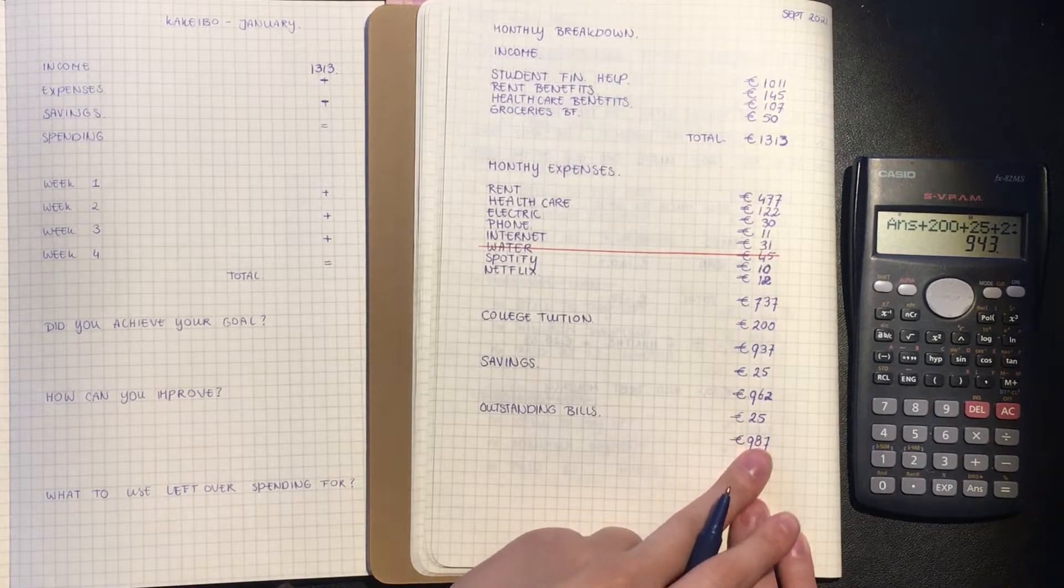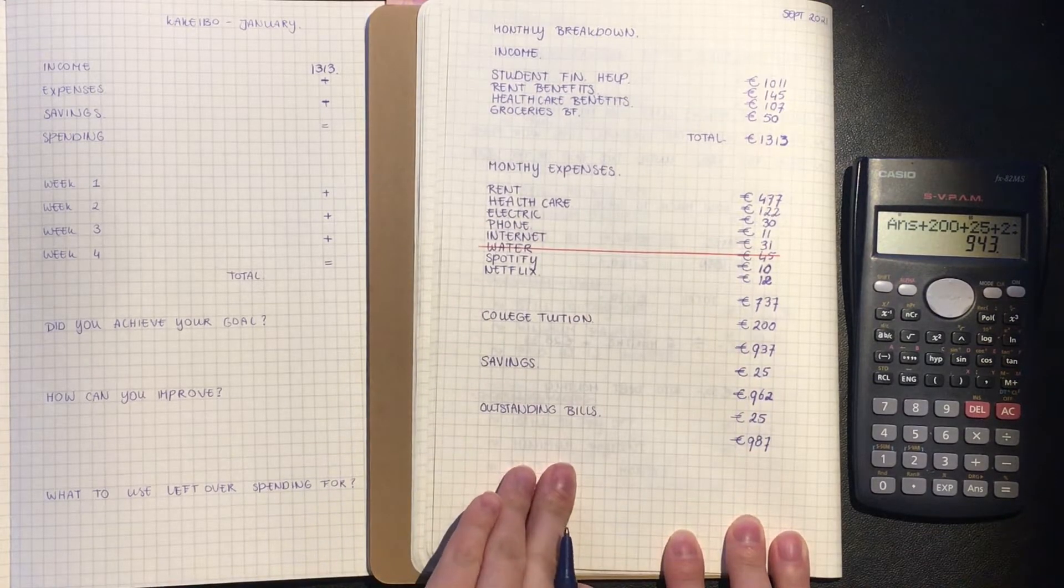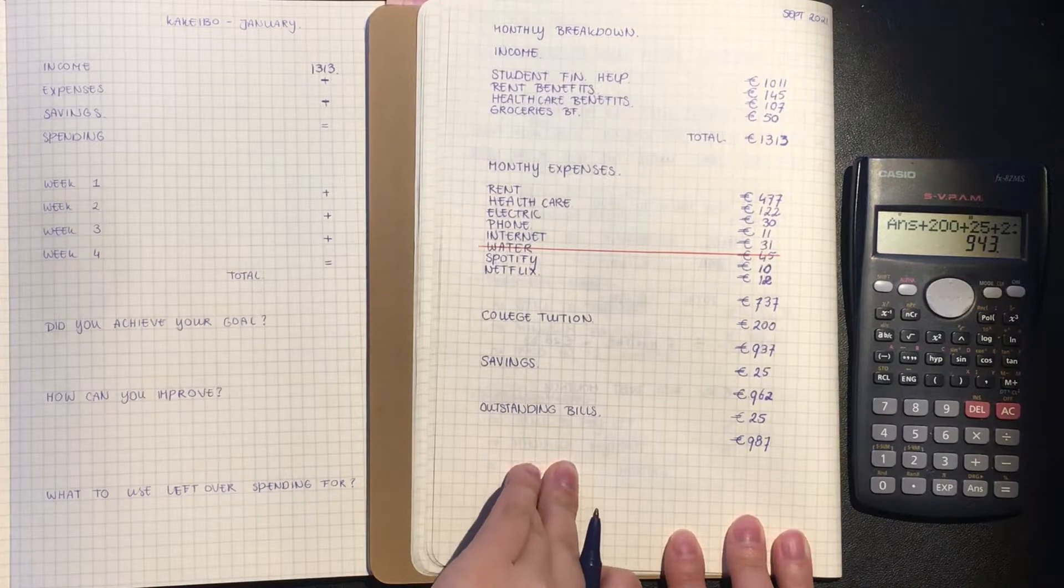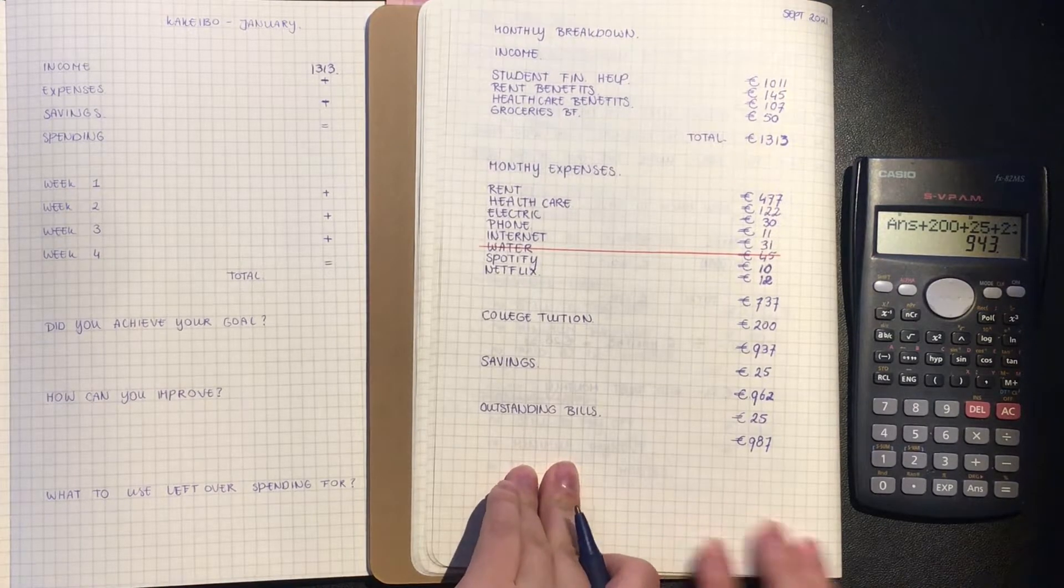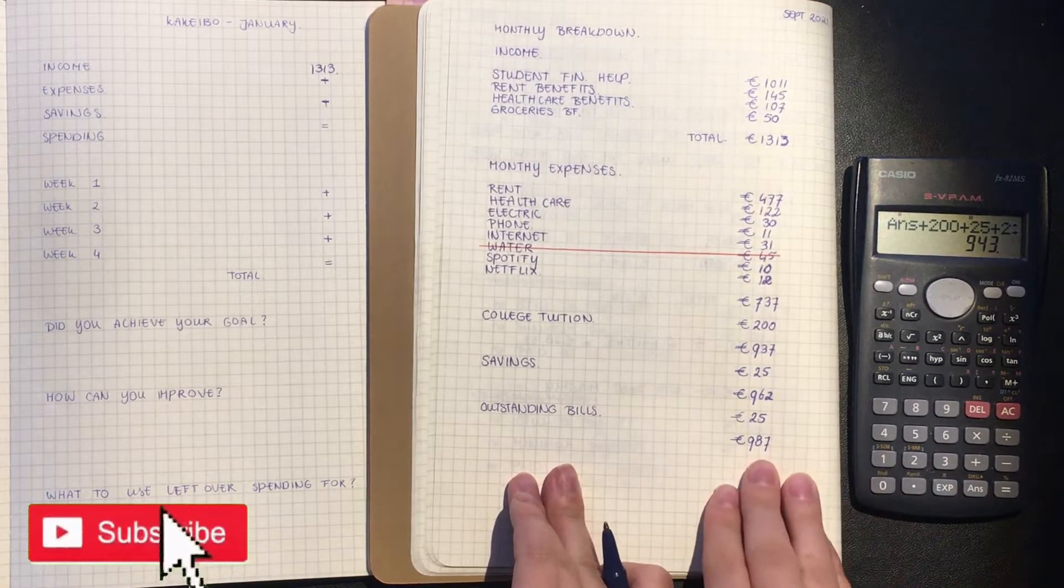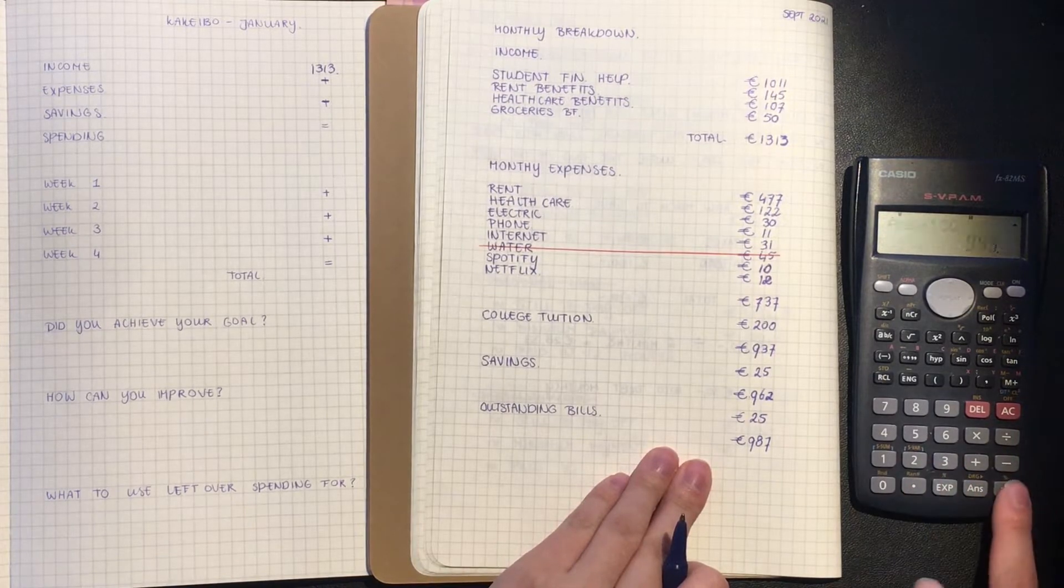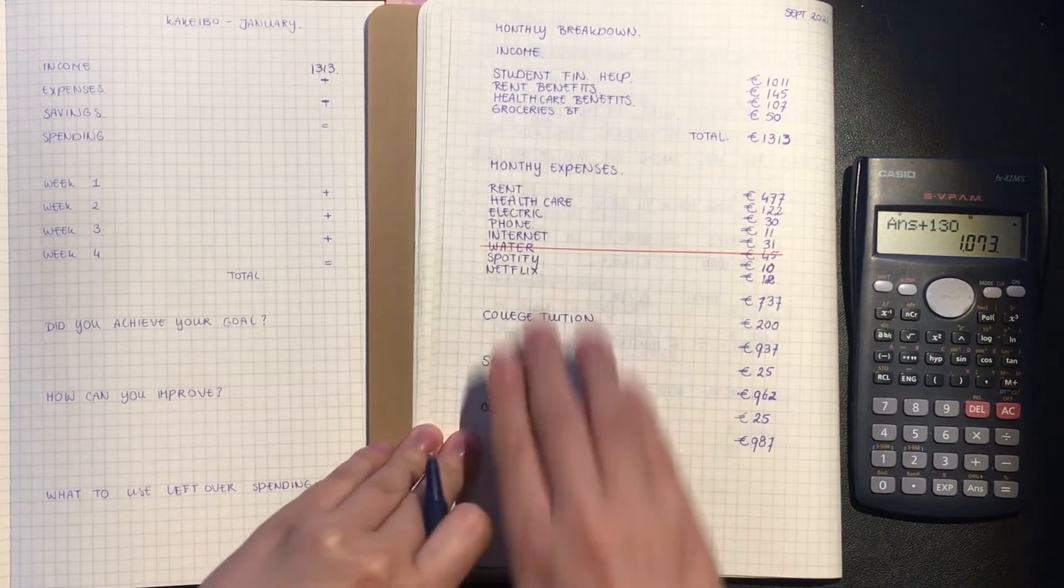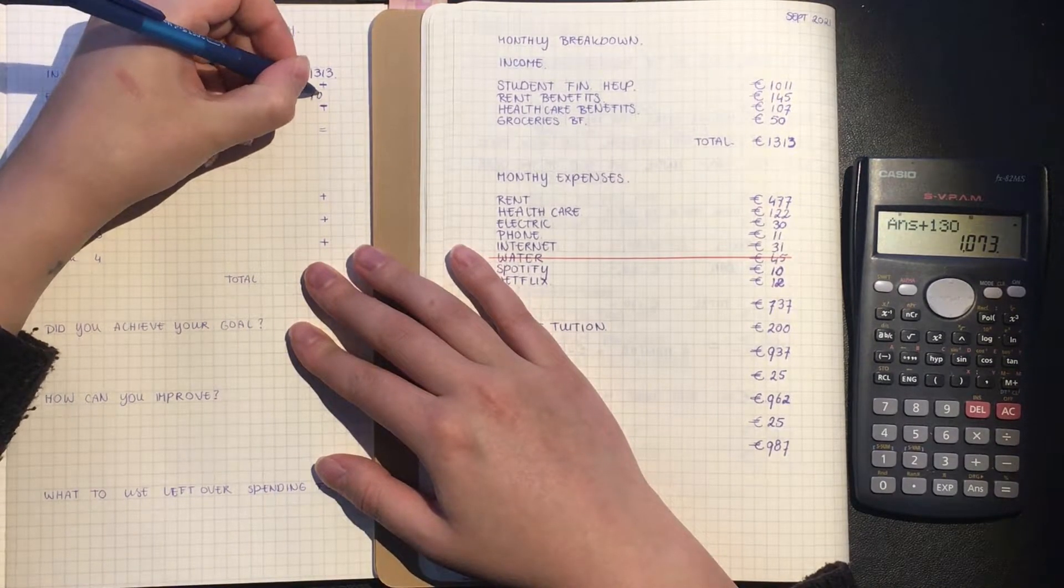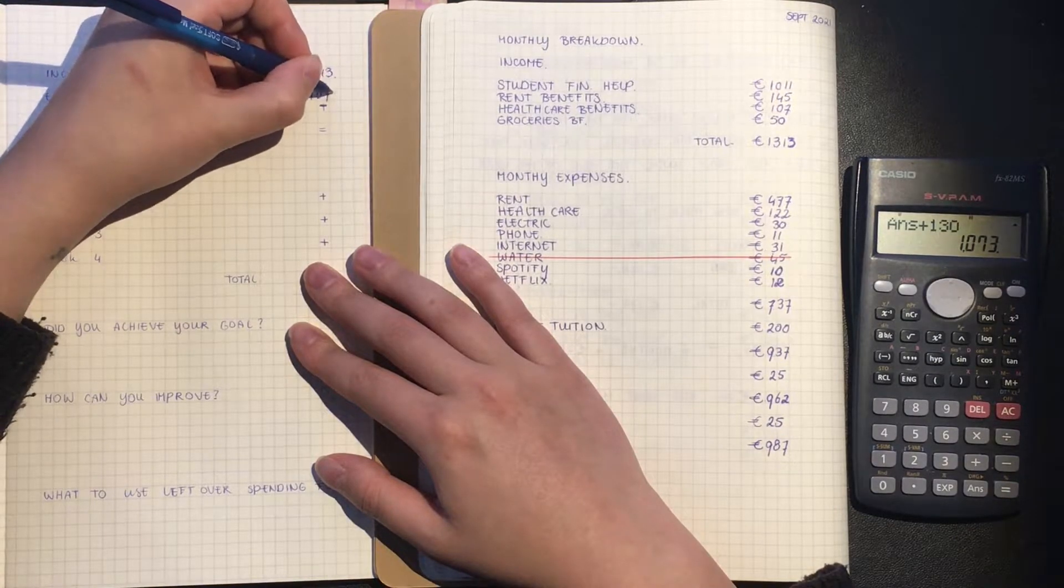So that means for my expenses in total, when it comes to saving and bills, it is 943 euros. Now I always calculate my groceries within my expenses, so let's add 130. So that means my expenses for the month of January are 1073 euros.